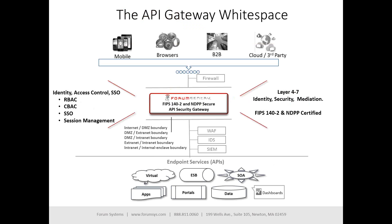For those not familiar with an API gateway, it fills what we call a white space — an area of functionality and technology in the network that is not provided for by your traditional architecture components.